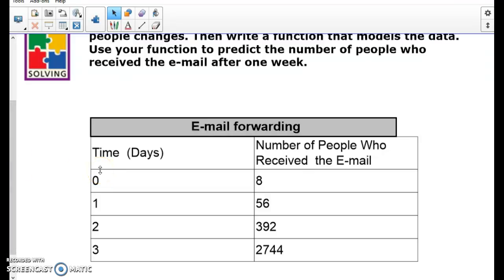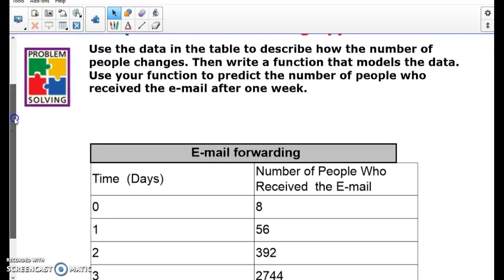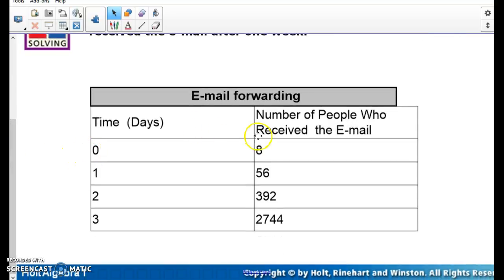So here we're talking about email forwarding versus time. So in zero days, number of people who received an email was 8. One day, 56. Two days, 392. Three days, 2744.